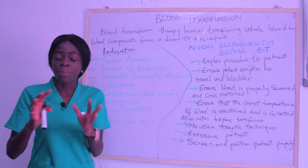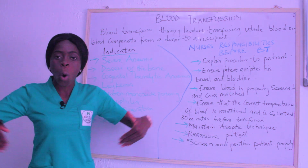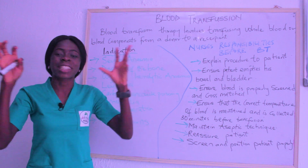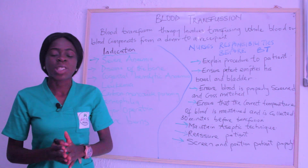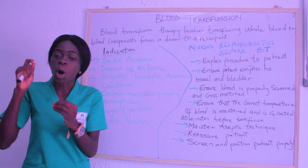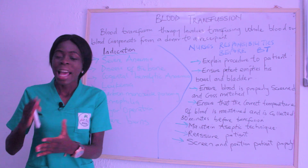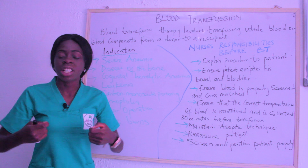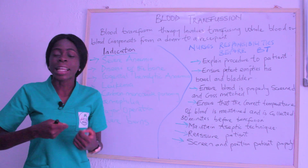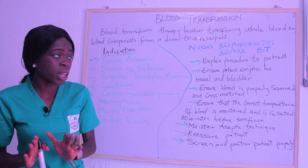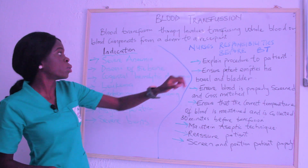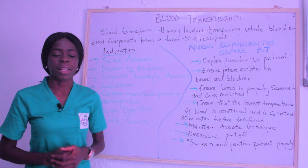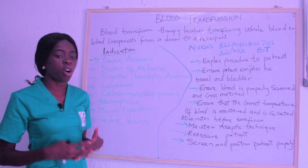It can be the platelets, the thrombocytes, or the whole blood — transfusing everything to the patient. What you transfuse depends on the patient's condition and what is lacking at that particular point in time. That takes us to the indications of blood transfusion.